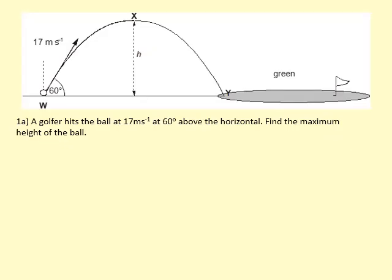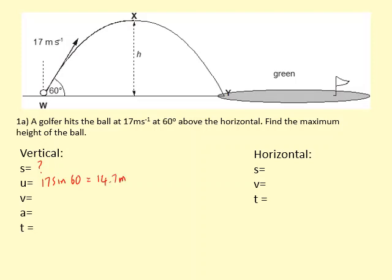Our golfer hits the ball at 17 meters per second at 60 degrees above the horizontal. Find the maximum height of the ball. For this part, we're only interested in the first half of the journey. So I'm going to set up SUVAT for the first half. S is what we're trying to find, how high it went. U is 17 sin 60, that's the vertical speed, which is approximately 14.7 meters per second upwards.